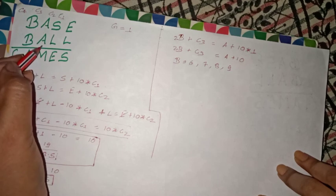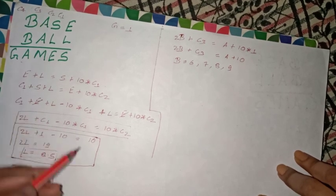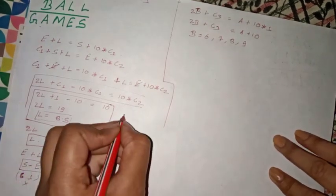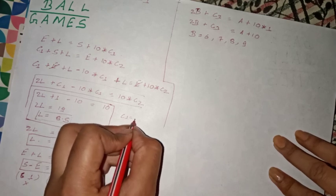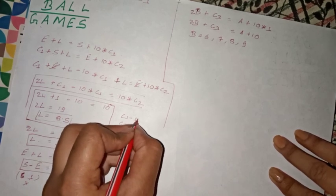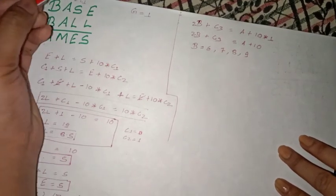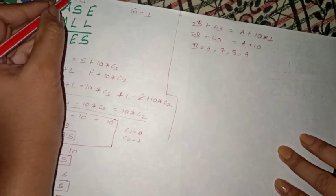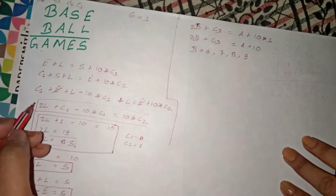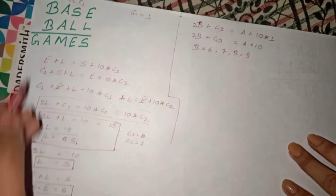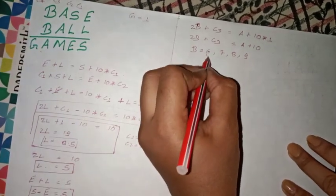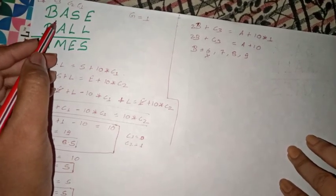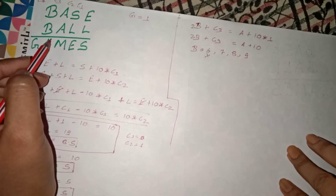Possible values are 6, 7, 8, or 9. If B equals 6, then 6 plus 6 is 12. Since c2 equals 1 and we assumed c1 equals 0, we get 2 plus 2 plus 1 equals 5. But this doesn't work, so B cannot be 6.